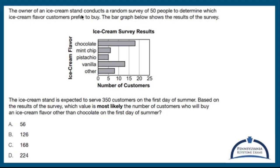The owner of an ice cream stand conducts a random survey of 50 people to determine which ice cream flavor customers prefer to buy. The bar graph below shows the results of the survey. We have chocolate, mint chip, pistachio, vanilla, or other.